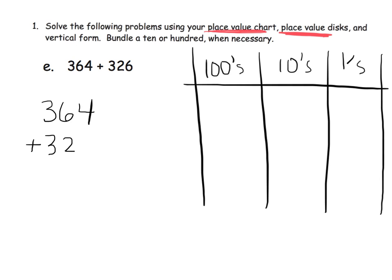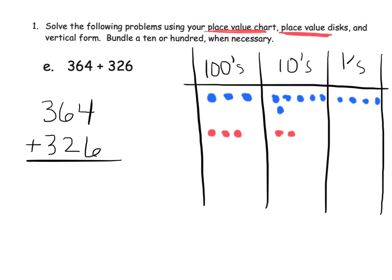364 plus 326. Now we're going to model that. Let's get the blue and model 364 — so 1, 2, 3, 4, 5, 6, and then 1, 2, 3, 4 — so there's 364, because we've got 3 in the hundreds, 6 in the tens, 4 in the ones. And now we're going to model 326 — 6 ones, 1, 2, 3, 4, 5, 6.